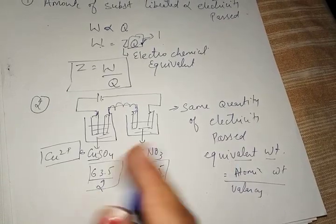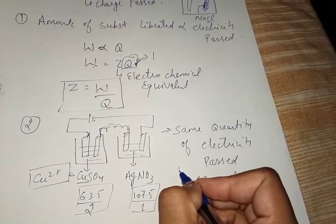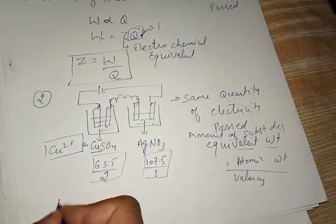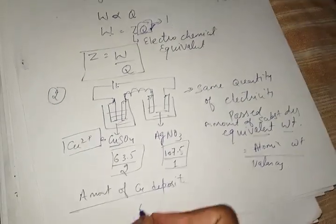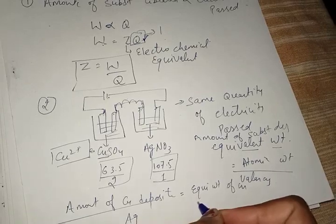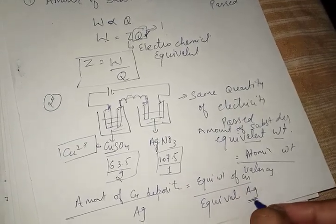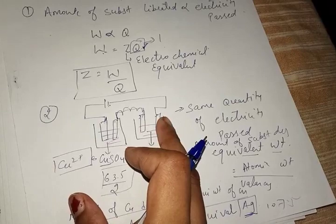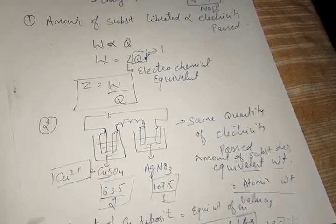When the same quantity of electricity is passed, we can see that the amount of copper deposited divided by the amount of silver deposited is in proportion to their equivalent weights. The equivalent weight of silver is approximately 107.5.